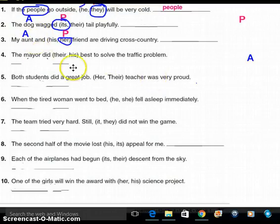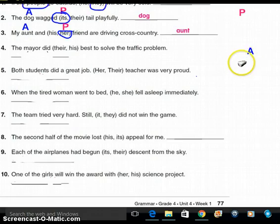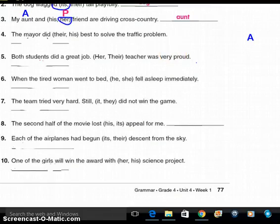Let's try one more than you're going to try on your own. My aunt and his, her friend are driving cross country. Well, I know aunt has got to be a noun. But if it refers back to something else, then it's going to be a pronoun. Here are the pronouns. Do I say his or her? Well, definitely her, because an aunt is a female, right? So, who does her refer back to? What's its antecedent? That's right, my aunt. Aunt and her are the same thing.